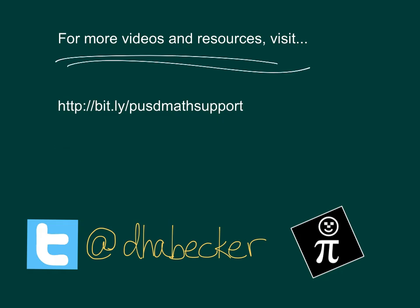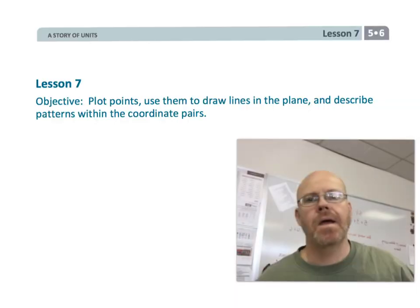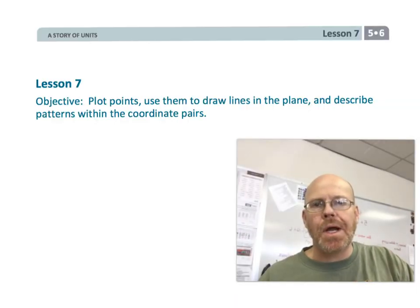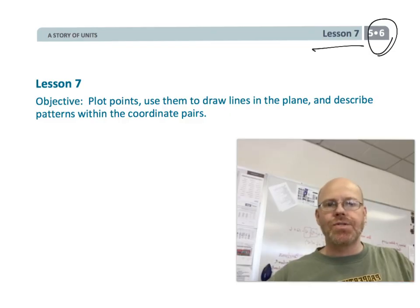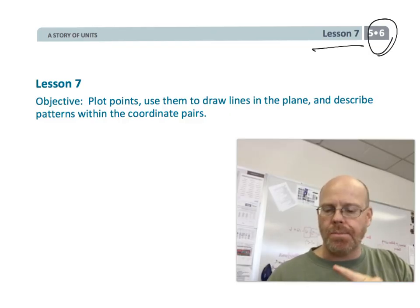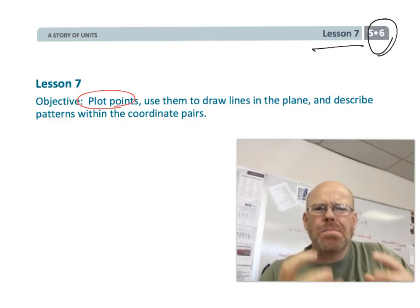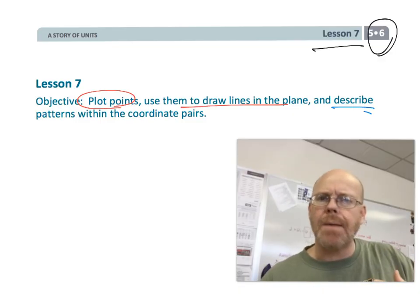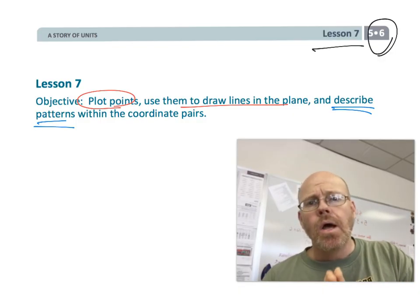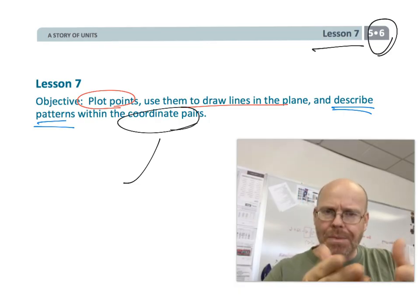This is fifth grade module six lesson seven. In this lesson, students are going to be plotting points, drawing lines, and then looking at those points and lines to talk about patterns — essentially coming up with the formula for that line. Let's get started.